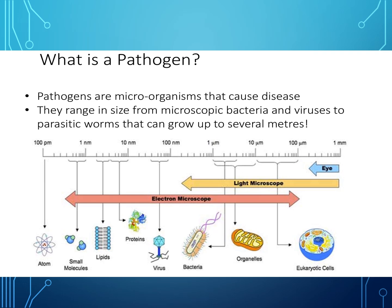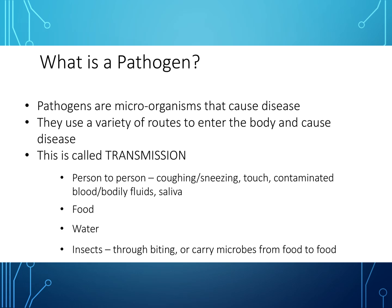So let's take it down simply. Firstly, what is a pathogen? Pathogens are microorganisms that cause disease. They range in size from microscopic bacteria and viruses to parasitic worms that can grow up to several metres. You can see here in the diagram below the different types of pathogens. Pathogens use a variety of routes to enter the body and cause disease.